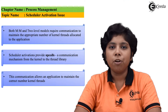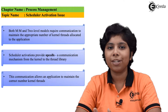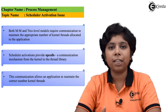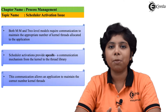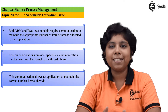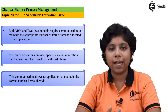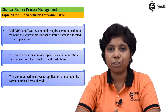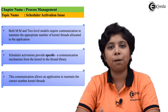An important issue in the multithreaded environment is the communication between the user-level thread and a kernel-level thread. To address this, there should be dynamic communication between the two levels. Many systems implementing the many-to-many model or two-level model implement another data structure between the user-level thread and a kernel-level thread, known as a lightweight process or LWP.